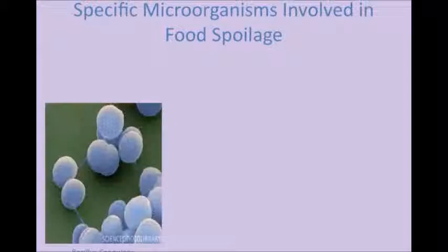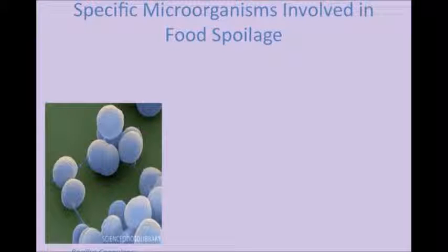Common bacterial species involved in food spoilage include members of the genus Clostridium, often involved in thermophilic anaerobic spoilage, and more resilient bacteria such as Bacillus coagulans, which are spore-forming and capable of growth in acidic mediums.